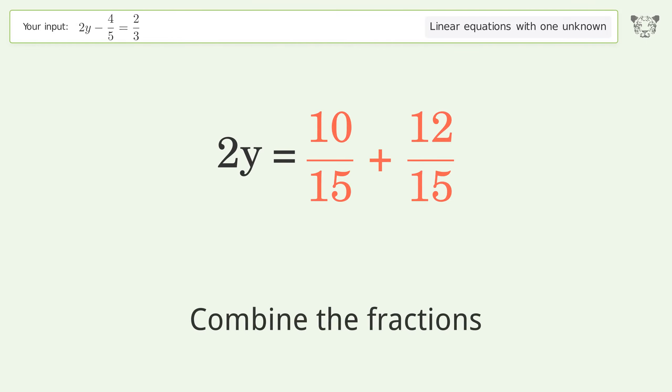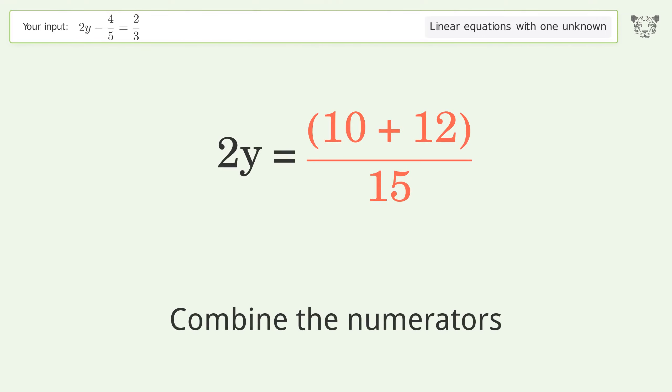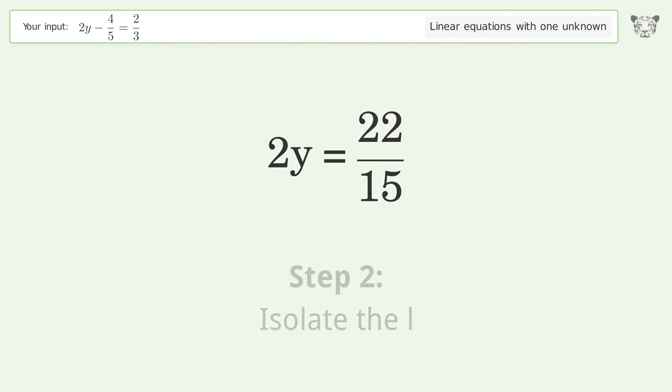Combine the fractions. Combine the numerators. Isolate the variable - divide both sides by 2. Simplify the fraction. Simplify the arithmetic. And so the final result is y equals 11 over 15.